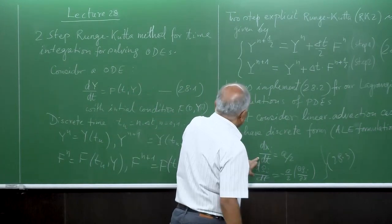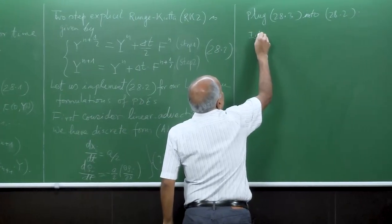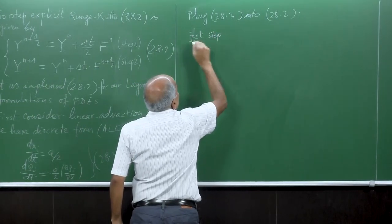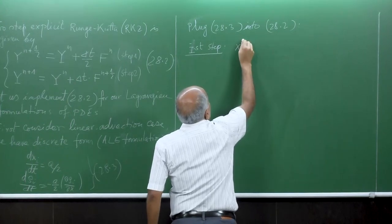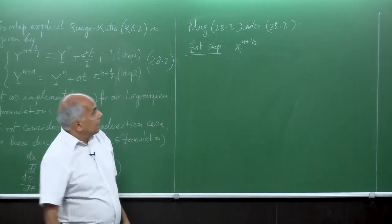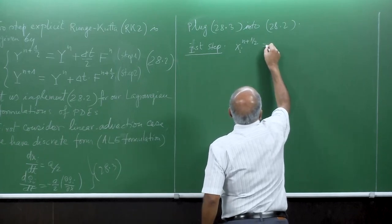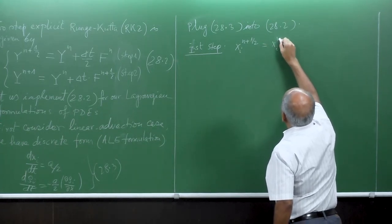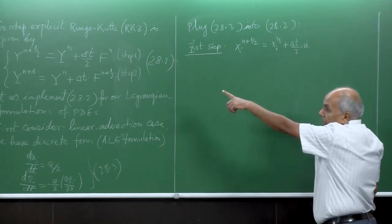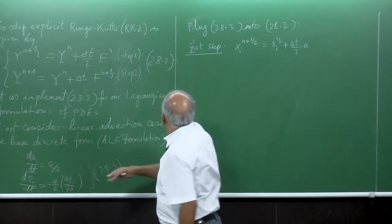So the first step: I move the particles with delta_t/2. So x_{i}^{n+1/2} = x_i^n + (delta_t/2) * a. So exactly that one here. Our capital F is here a/2.